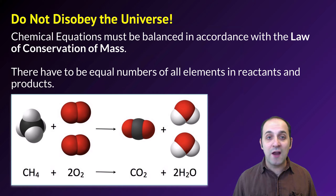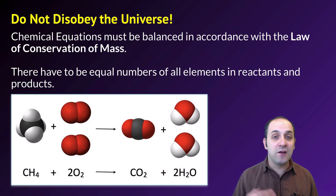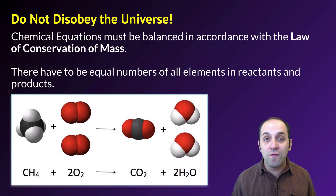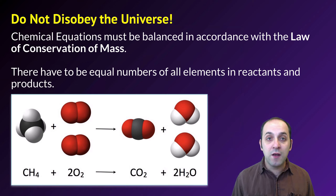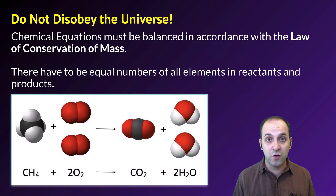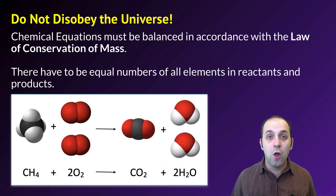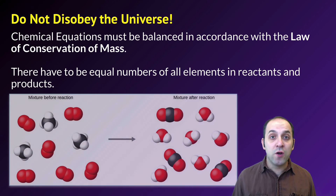When we write chemical reactions, we absolutely must follow the law of conservation of mass — the total amount of mass on each side of the equation has to be the same. This means there need to be equal numbers of all elements in the reactants and in the products. In this example, there's one carbon, four hydrogens, and four oxygens on each side. A chemical reaction has happened — the atoms are in different compounds — but the number of each element remains the same. This is what we call balancing a chemical reaction.